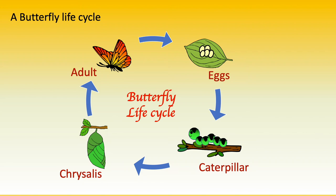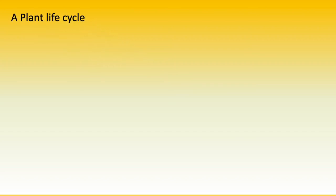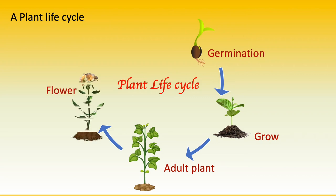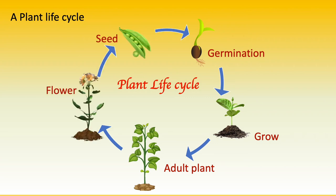A plant life cycle starts as a seed, and when the seed sprouts we call that germination. Then it starts growing and becomes an adult plant. When the plant is mature it produces flowers. The flowers are fertilized — sometimes by animals like honeybees, or sometimes by the wind. After a flower is fertilized, most plants make seeds in the form of fruit. The seed inside the fruit can be planted and grown into a new plant, and the cycle starts all over again.